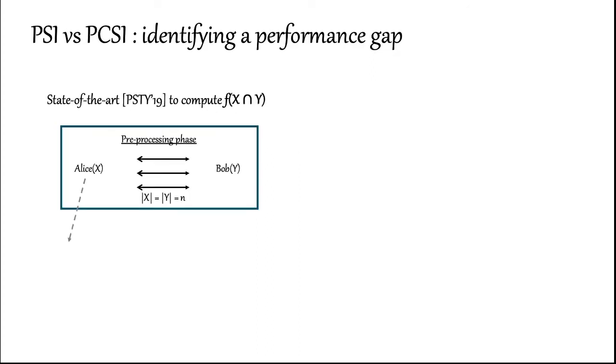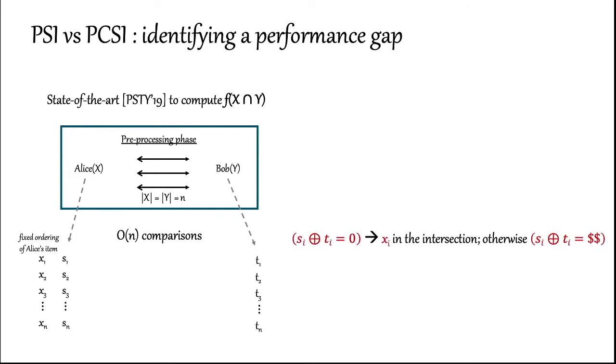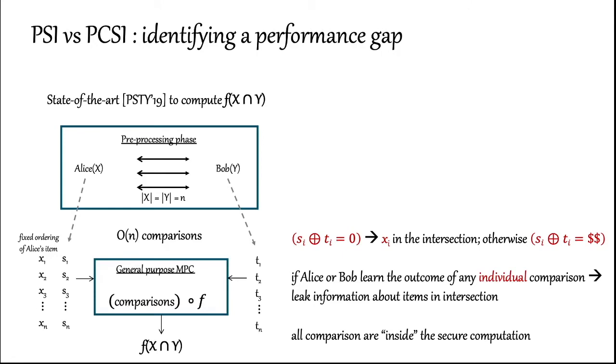Our starting point is the PSTY protocol. It starts with a preprocessing phase where Alice has input x and Bob has input y. For the rest of this talk, let's assume the size of the sets is n. At the end of the preprocessing phase, Alice learns a fixed ordering of her items. Alice and Bob then learn vectors s and t such that si and ti are an additive share of 0 if xi is in the intersection. If not, si and ti are a sharing of a pseudo-random value. To compute a function over the intersection, the si and ti now need to be compared but in such a way that the outcome of no individual comparison is leaked to Alice or Bob. So all the comparisons are made inside the secure computation. The output of the comparisons are then fed into another circuit that computes f.